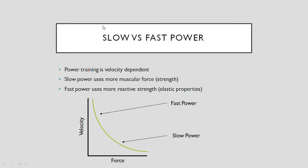In terms of slow versus fast type power, this is based on the force-velocity curve. This relationship tells us that the more force an exercise produces, the slower the velocity will be, and the higher the velocity, the lower the force. For example, with a back squat, if we take 50% of our 1RM we can move that a lot faster than if we took our one rep max and tried to do it as fast as we can — even though we're trying to move it fast, it won't move at the same velocity as a lighter weight. The more load we put on, the slower we can actually move, and the less load we have, the faster we can move that implement, our body, or the load.